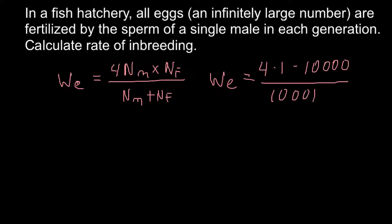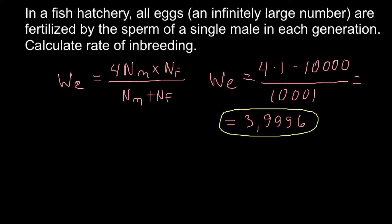We divide by 10,000 females plus 1 male, giving us 40,000 divided by 10,001. The answer is approximately 3.99, or just 4 individuals — effectively 2 females and 2 males. So even when we have 10,000 females and 1 male, the loss of genetic variability is equivalent to a tiny freely-breeding population of 4.